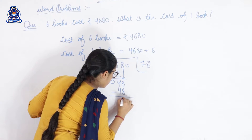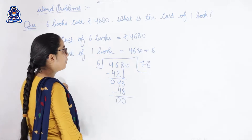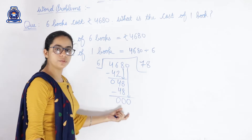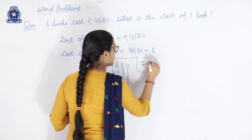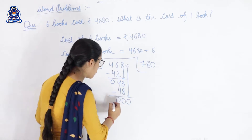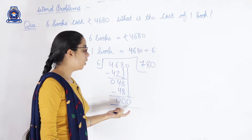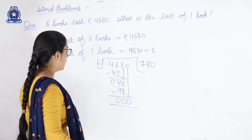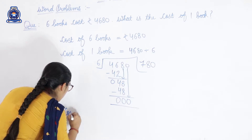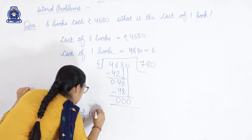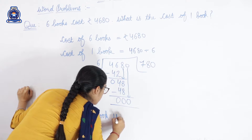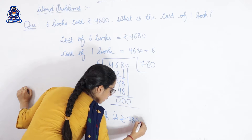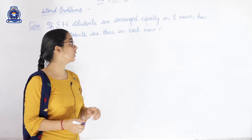We subtract: forty-eight minus forty-eight is zero. Now we carry down zero. Since we can't divide zero by six, we put zero in the quotient. So our quotient is seven hundred eighty and the remainder is zero. This quotient is the value of one book. So we write: cost of one book is rupees seven hundred eighty.